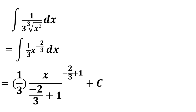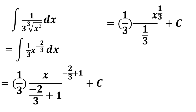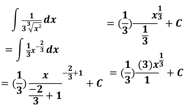Negative 2 thirds plus 1 is the same as 1 minus 2 thirds, which is equal to positive 1 third. So this is equal to 1 third x to the power 1 third all over 1 third, plus c. Invert the divisor and proceed to multiplication. So we have 1 third times 3x to the power 1 third over 1, plus c. Cancel 3 and 1 third is 1, so the final answer is x to the power 1 third plus c, or the cube root of x plus c.